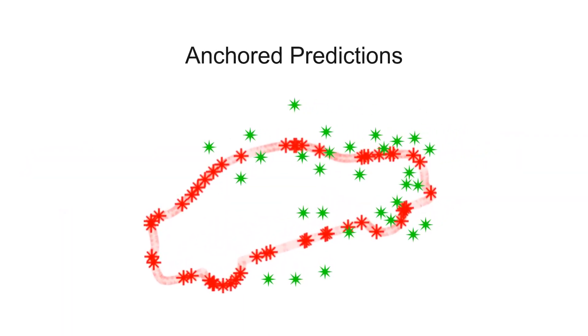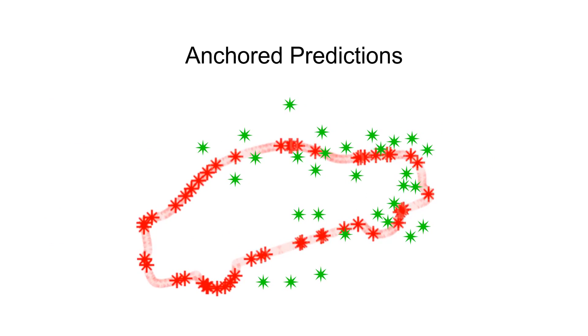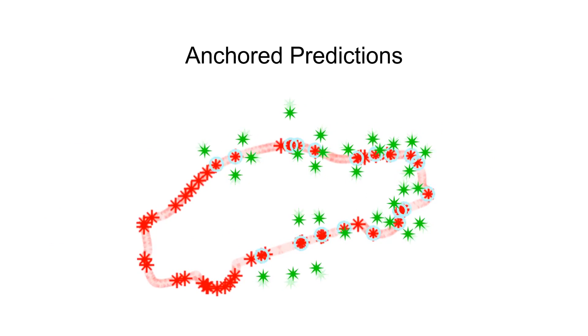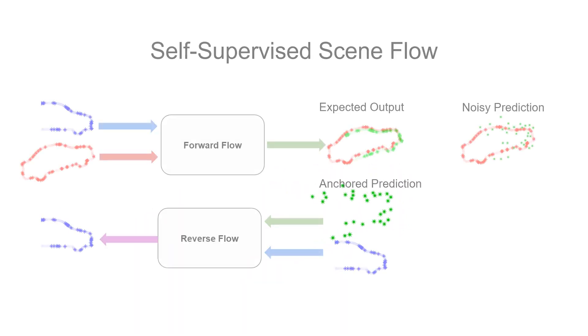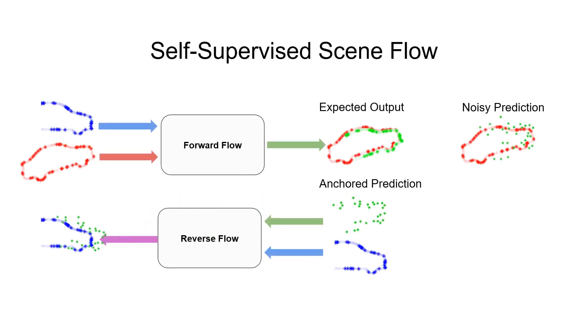To ameliorate the situation, we use the nearest real point to the projected point as an anchor, pulling the points closer to the associated surface. In practice, we find that this greatly improves our results.